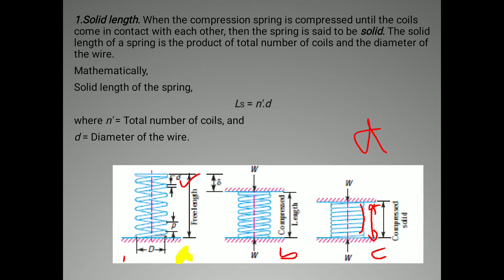Mathematically, solid length is denoted as Ls, where Ls = n' × d. Here n' is the total number of coils — 1, 2, 3, 4, 5, 6 — and small d is the diameter of wire. Please don't get confused: capital D is the total (mean) diameter of the coil, and small d is the diameter of wire. So Ls = n' × d.